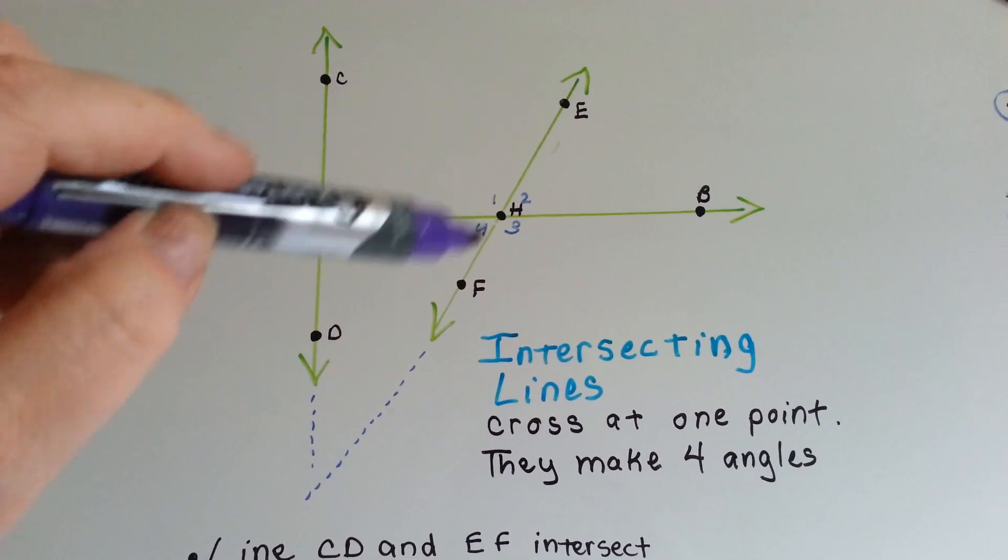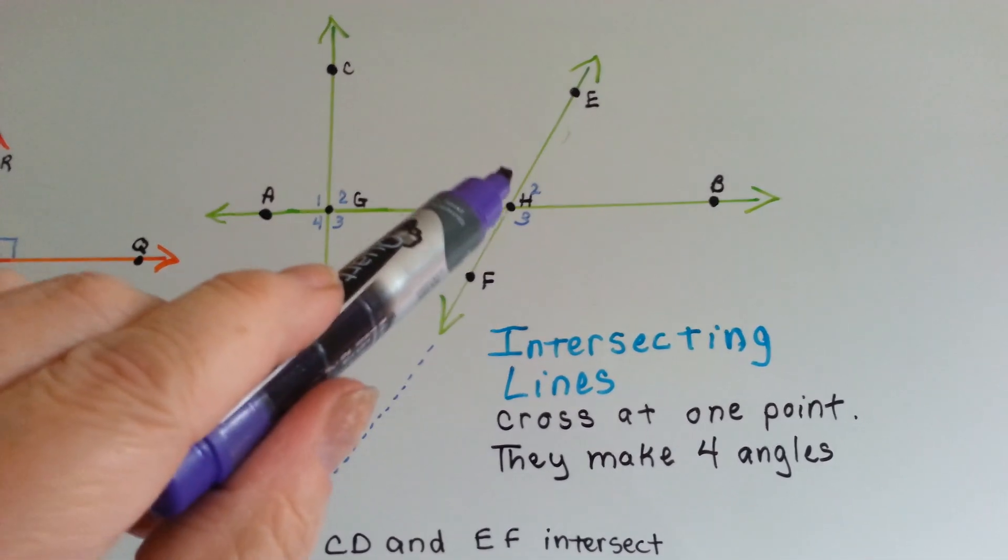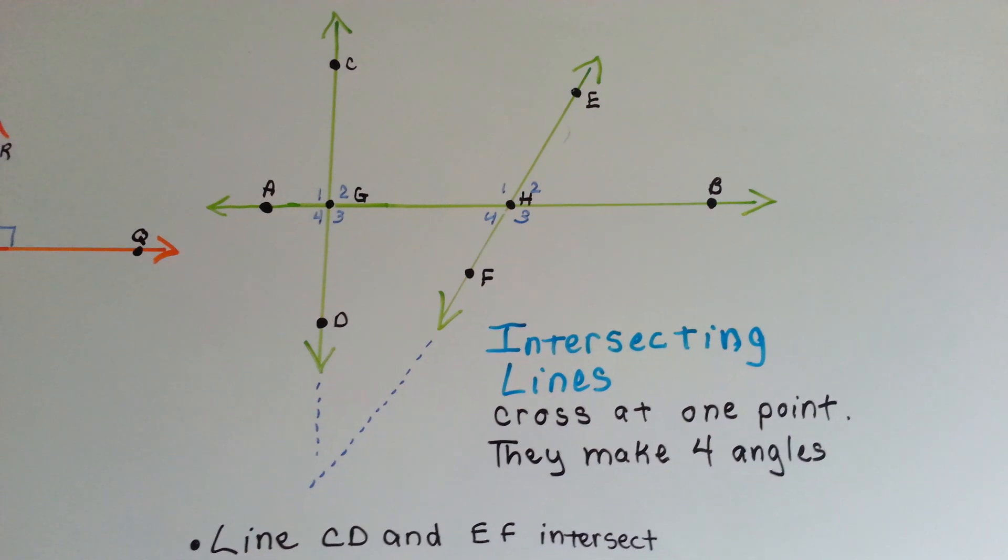And where EF is intersecting line AB, it makes one, two, three, four. See? Four angles.